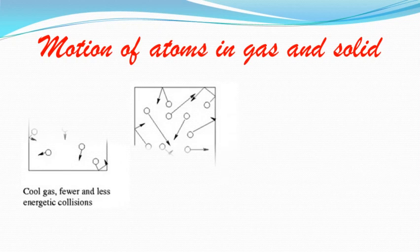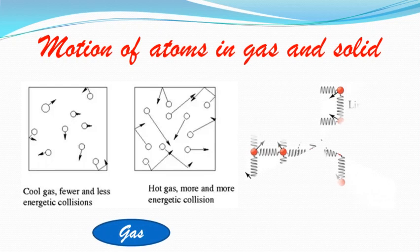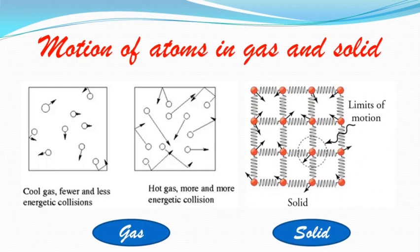Now let's understand the motion of atoms in a gas. A picture on the screen shows the velocities of atoms in a gas at high and low temperatures. The direction and length of arrows show the direction and magnitude of atomic velocity. In cool gas, there are fewer and less energetic collisions — particles move with lower velocities. In hot gas, collisions are more energetic and atoms move with greater speed.